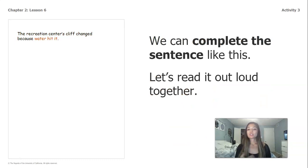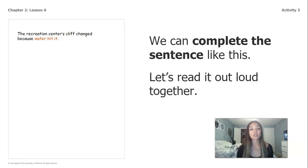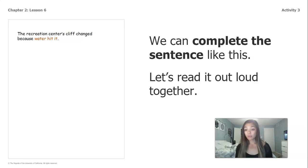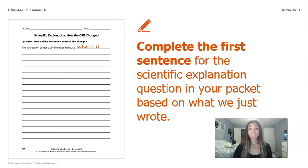Here's an example of a way that we could fill that in. We can complete a sentence like this: 'The recreation center's cliff changed because water hit it.' We're using information we've learned in our story so far — we know the cliff is located near the water, and we know that water can change landforms because we've read about it in our books and we've investigated it with the flower.